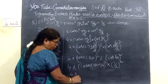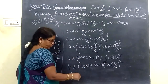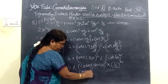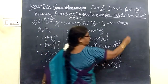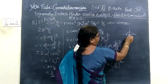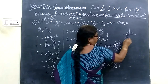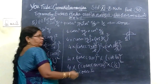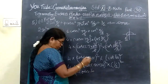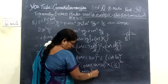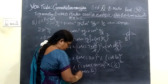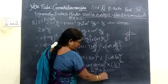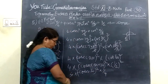This is of the form 180 plus theta. So sin(180 + theta) — this is in the third quarter. In the third quarter, sine is negative. So this one is minus sin(30°).